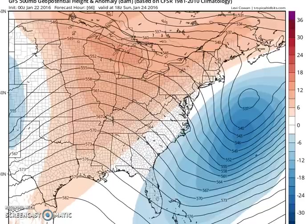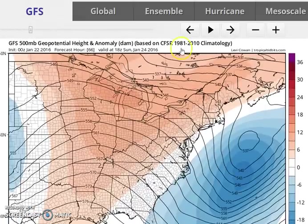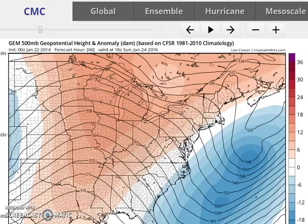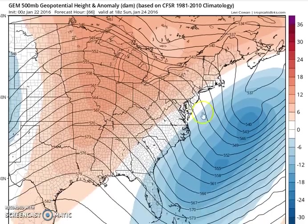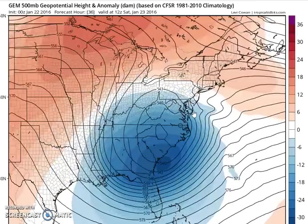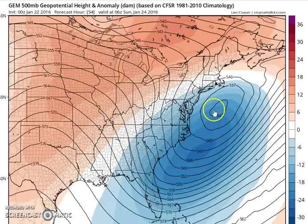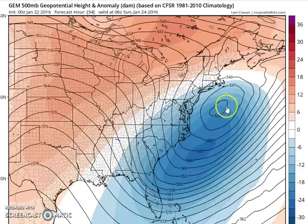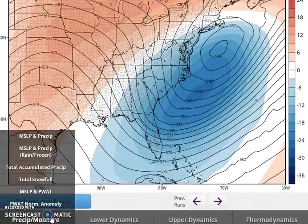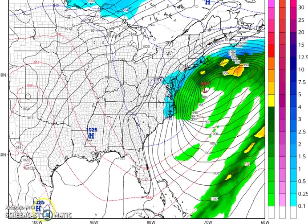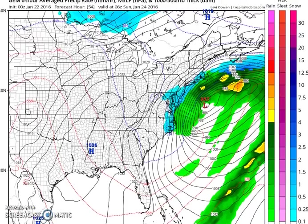If we jump to the Canadian model, you'll see it probably splits the difference. Where the GFS takes the upper low one way and the NAM takes it the other way, the Canadian goes somewhere in between — perhaps a little closer to the NAM than the GFS. In terms of the practical surface picture, let's switch over to that.